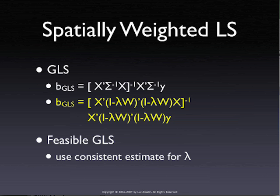This is covered in Chapter 26, the review paper — a roughly 75-page review paper that spells it out as well. This is the idea for a spatial autoregressive error.